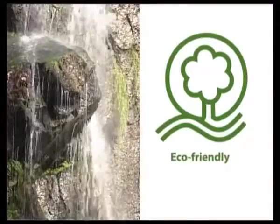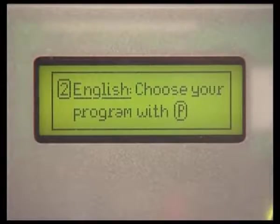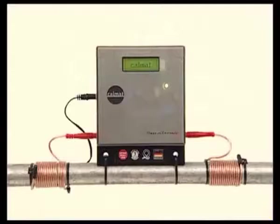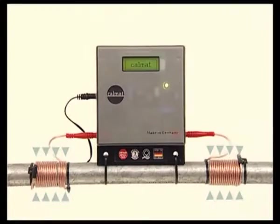CalMAT is your eco-friendly solution against scale and rust. The CalMAT impulse technology prevents scale from blocking your pipes. The intelligent impulses rob scale of its ability to stick to surfaces.